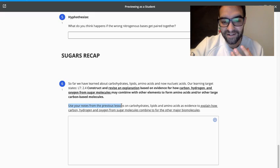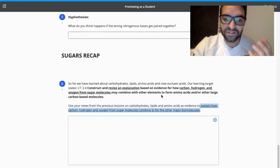The prompt: use your notes. I've been advising that you take notes. If you haven't taken notes, pull open your old assignments so that you can look through the notes. Use that as the evidence to then explain how carbon, hydrogen, and oxygen from sugar molecules make these major biomolecules.